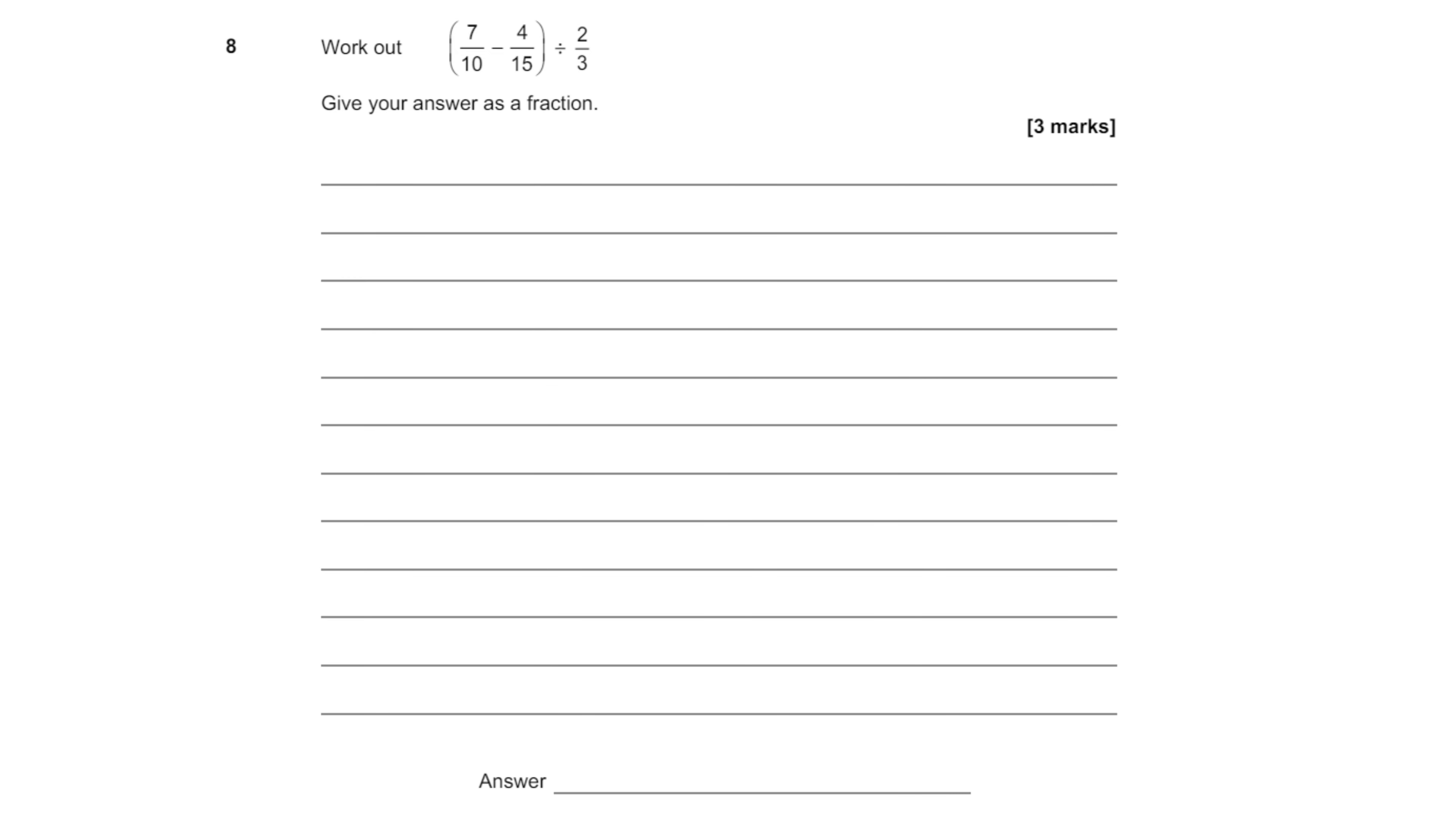Hey everyone, so today I'm going to be doing question 8 from the past paper link down below. We need to work out 7 over 10 minus 4 over 15 all in brackets divided by 2 over 3. We need to give our answer as a fraction and this is a 3 mark question.